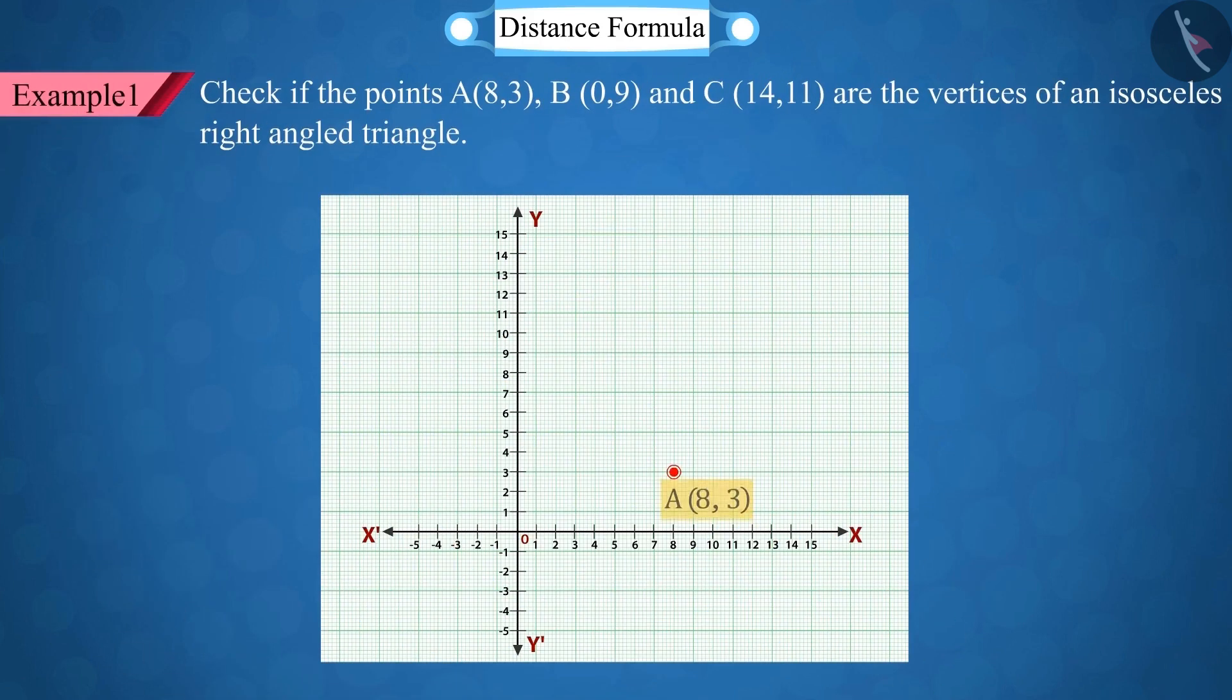Check if point A, point B, and point C are the vertices of an isosceles right-angled triangle.